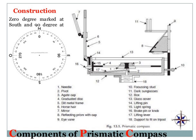The lifting pin is used to dampen the oscillation and is provided between the box and the object vane. The next part is the braking pin or braking lever, which is generally provided to disconnect the connection between the magnetic needle and the pivot so that the wear of the pivot is minimized. This is all about the construction of the prismatic compass.